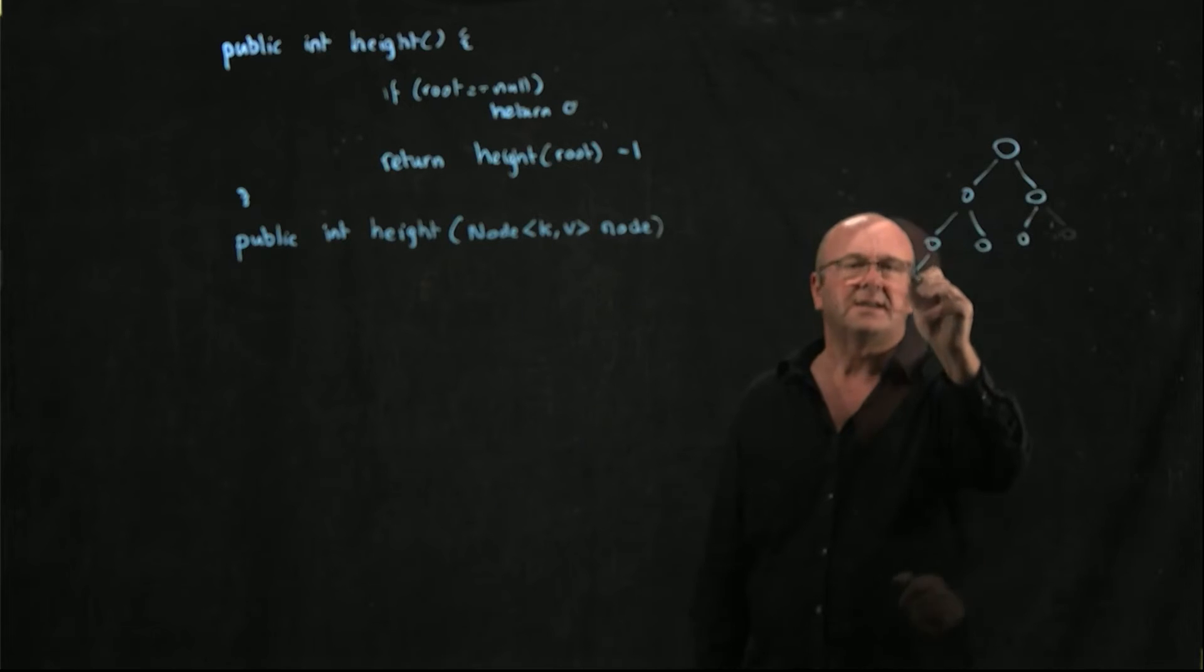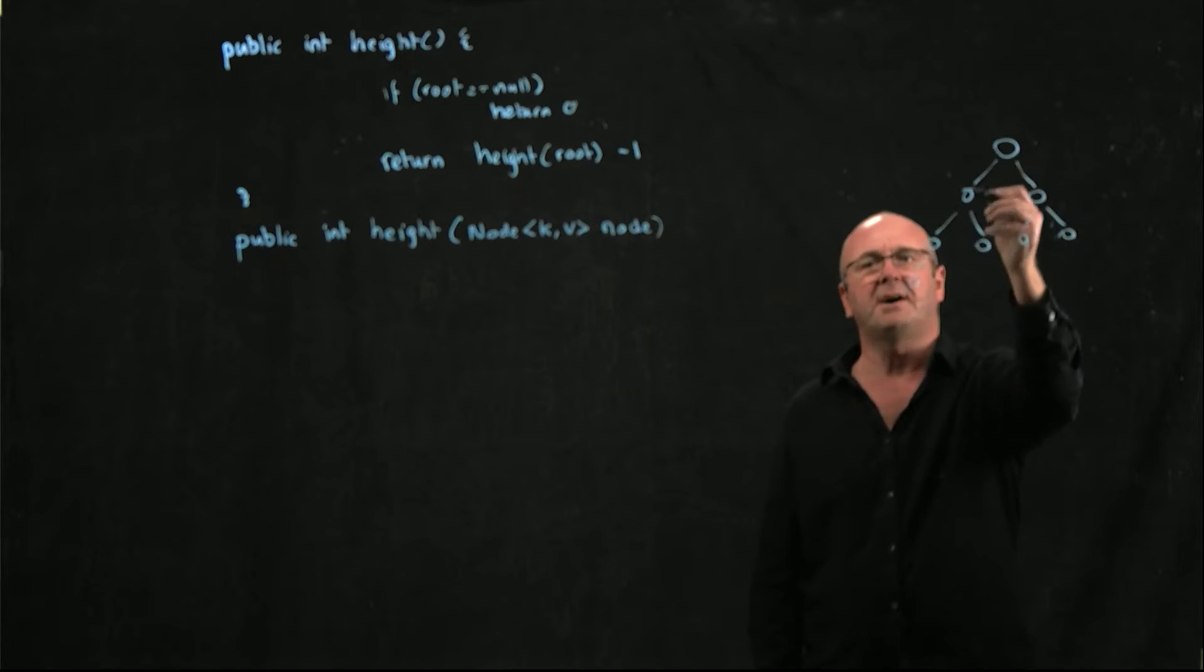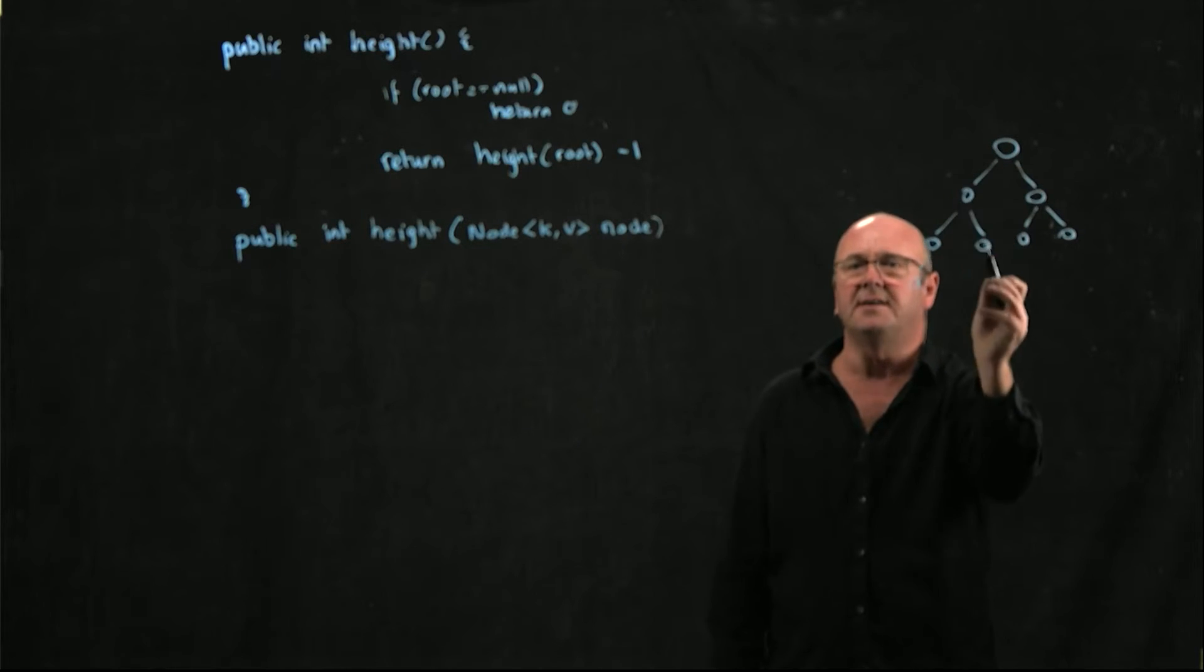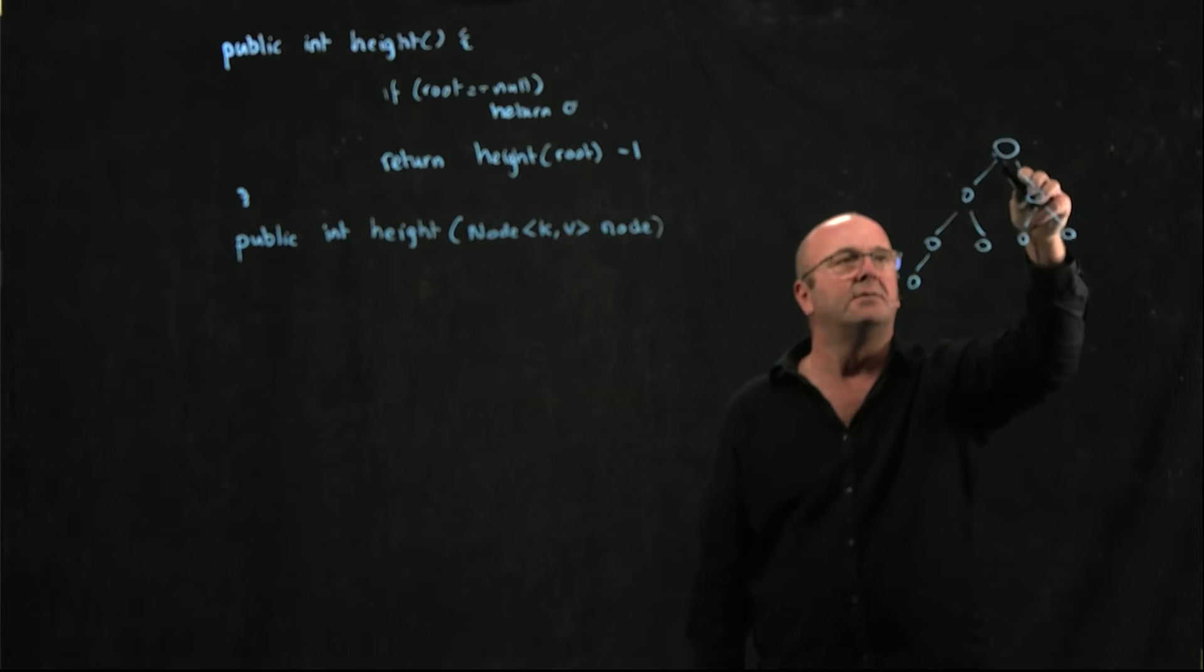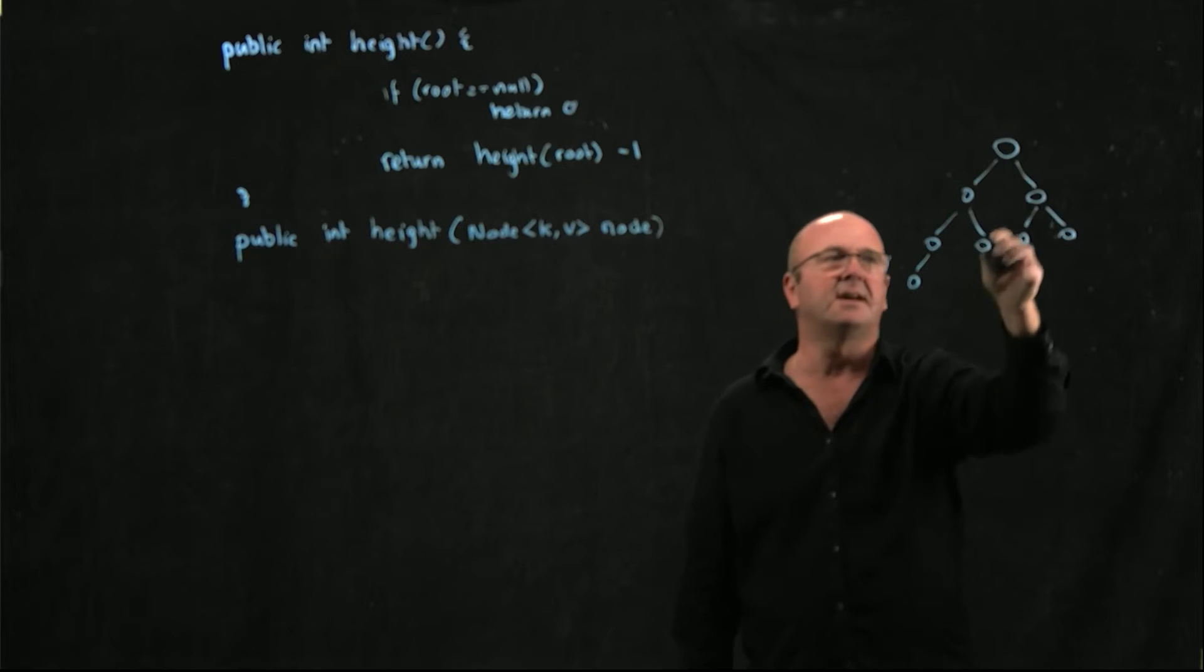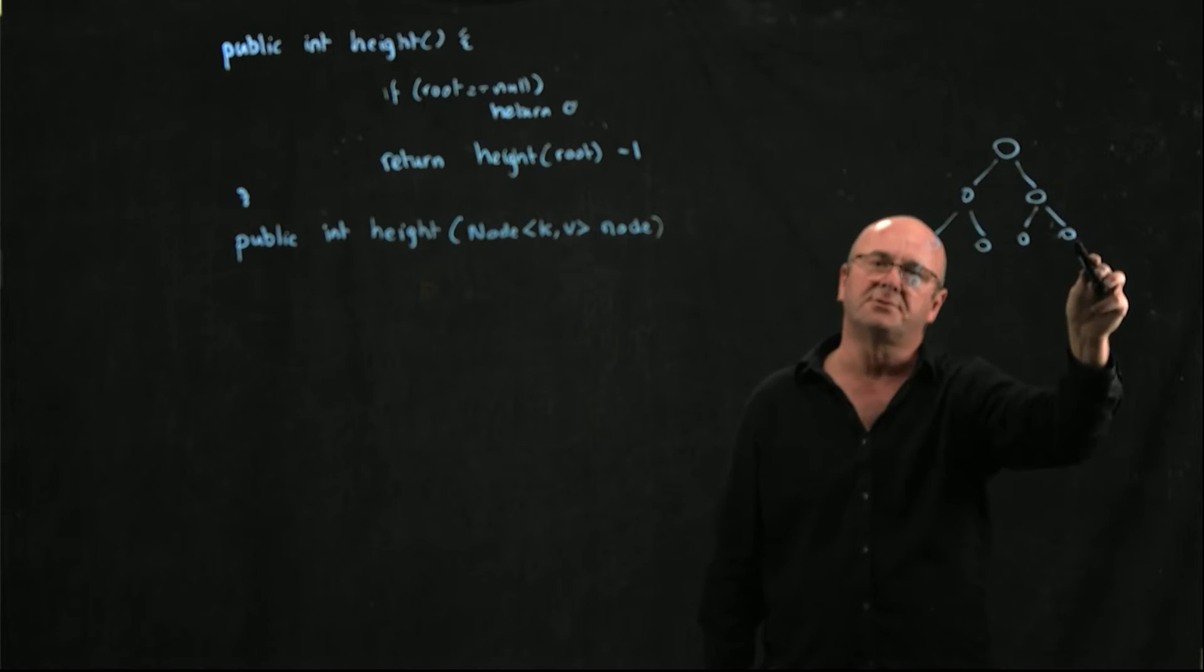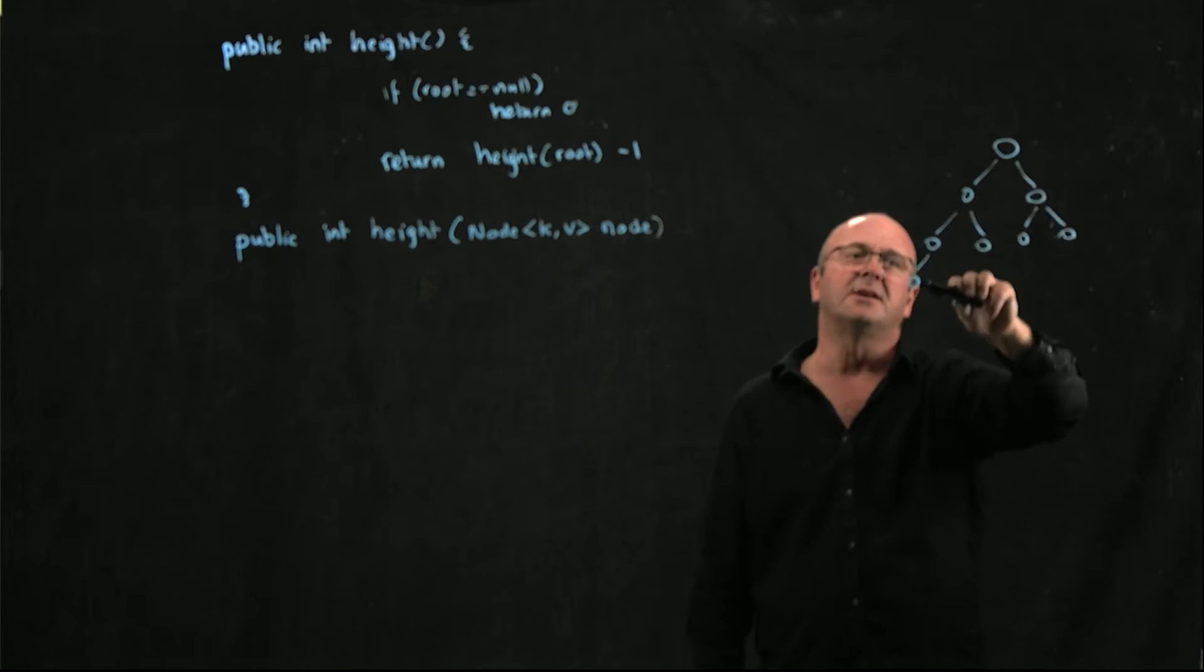So at the root node here, I've got one, two, three children on the left, and I've got one, two children on the right, so the height is going to be 3.